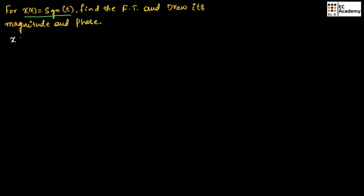The signal given is x(t) equal to the signum function. We know the signum function can be represented as: for t greater than 0, the signum function has amplitude 1; for t less than 0, it has magnitude minus 1; and for t equal to 0, the signum function is 0.